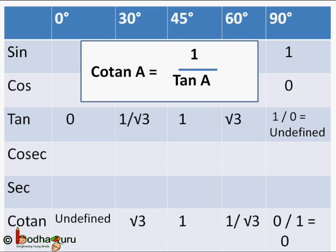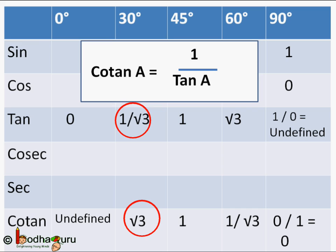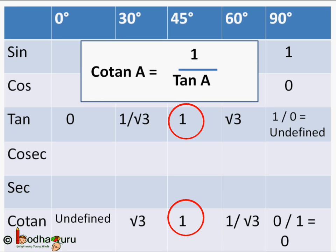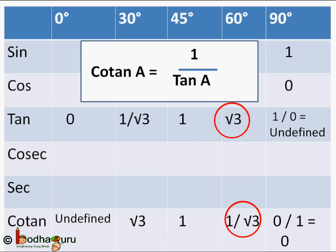Finally, cot(a) = 1/tan(a). cot(0°) = 1/0, which is undefined. cot(30°) = 1/(1/√3) = √3. cot(45°) = 1/1 = 1. cot(60°) = 1/√3. cot(90°) = 0/1 = 0, since tan(90°) is undefined and in cotangent form becomes 0/1.